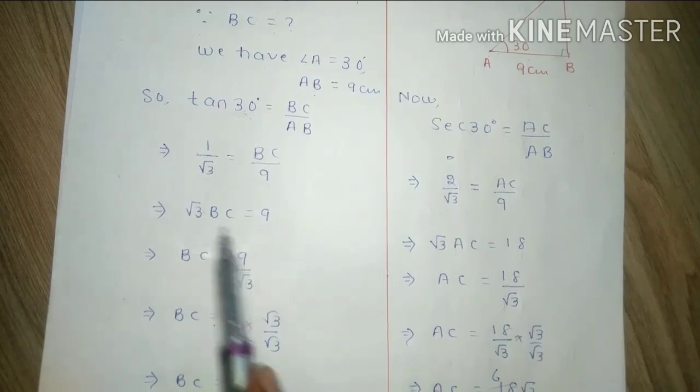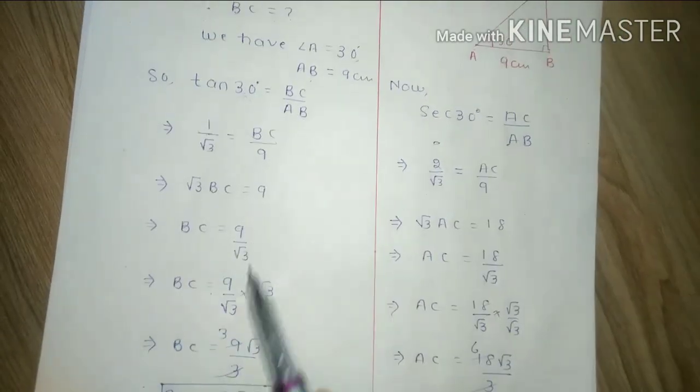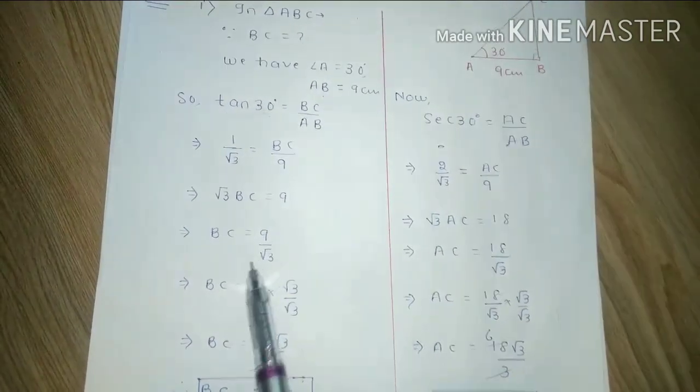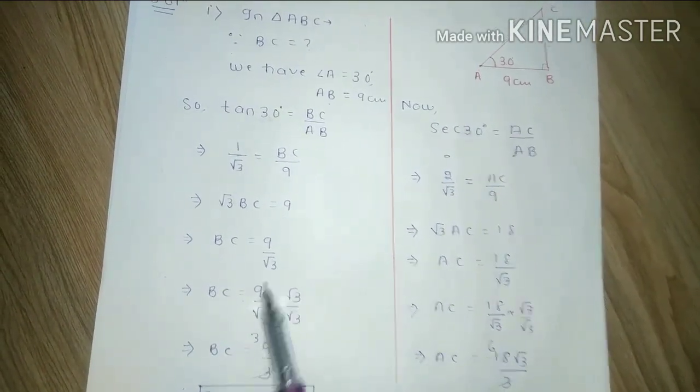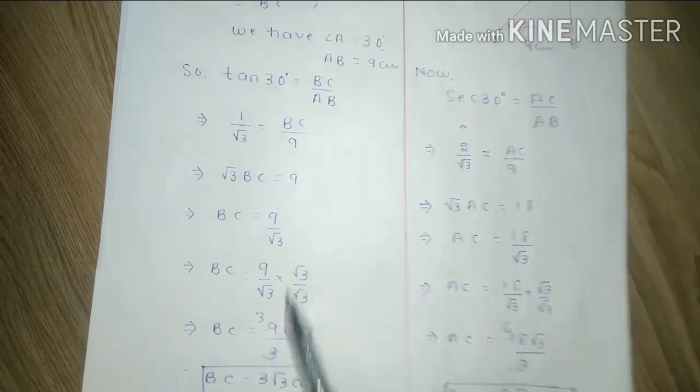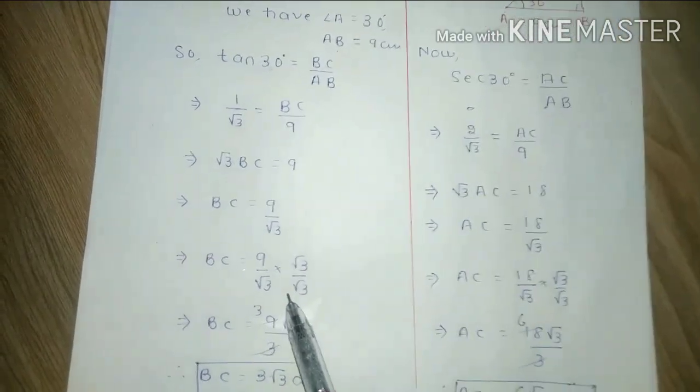Next we will have rationalization which we have studied in class. So BC, the denominator is into under root 3, so under root 3 and under root 3.